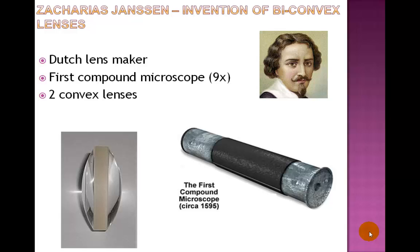Interestingly, the history of microbiology does not begin with scientists but actually begins with lens crafters and cloth merchants and their lenses. One such lens crafter was a Dutch gentleman named Zacharias Jensen. As a way to become competitive in this trade, Jensen began seeking better ways to make lenses, which then led to his invention of the first compound microscope. According to the records, at the time of his invention Jensen was probably only 15 years old.